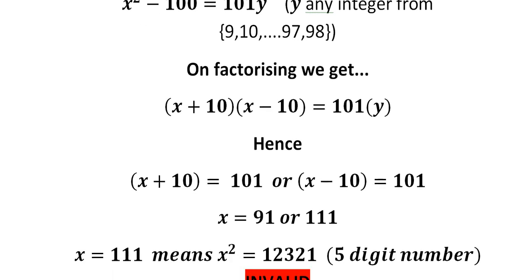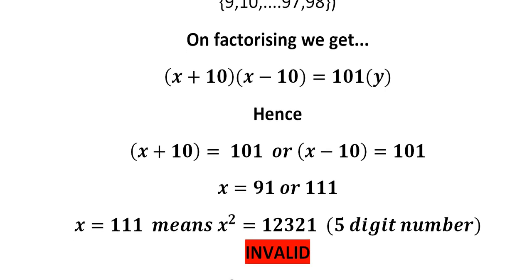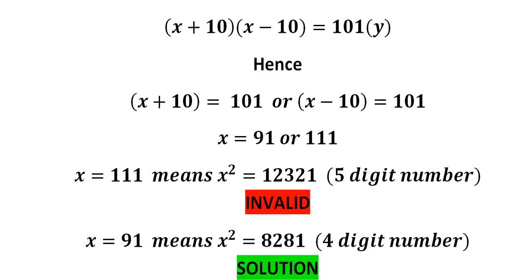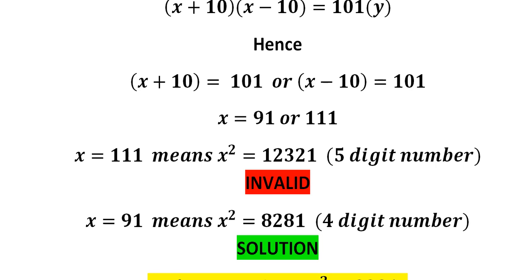X = 111 is invalid because x² = 12,321, which is a five-digit number, and we're only interested in four-digit numbers. Since x must be less than 100, x = 91 is the valid solution. And lo and behold, 91² = 8281. Look at that — 81 is one less than 82, and that's no coincidence! That's our solution and the only solution. Why is it the only solution? Because x can only be 91 or 111, and we've ruled out 111, leaving only x = 91.